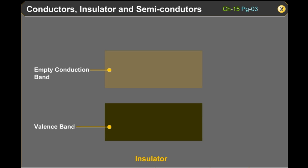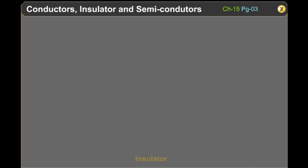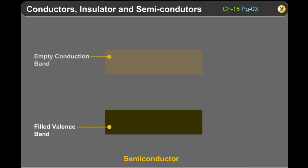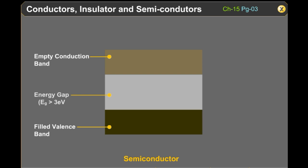In an insulator, the valence band is completely filled but the conduction band is empty, and the gap between the valence band and conduction band is very large — that is, the forbidden energy band gap is very large. Thus, insulators do not allow electricity to flow. In semiconductors, the valence band is completely filled and the conduction band is empty, but the forbidden energy band gap is less than that of insulators. As a result, the semiconductor acquires small conductivity at room temperature.